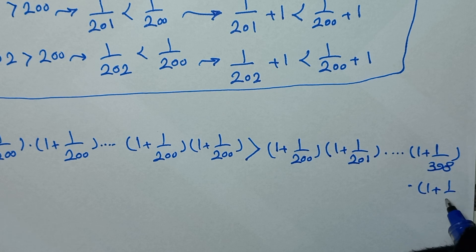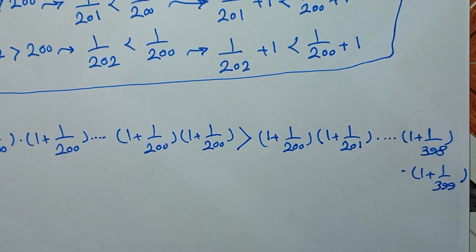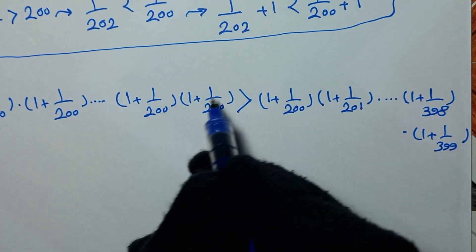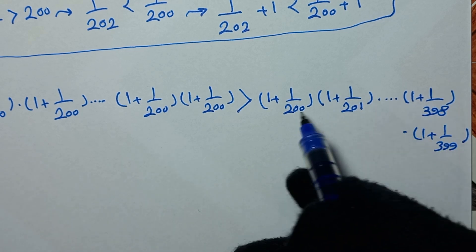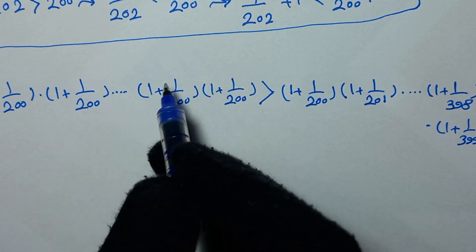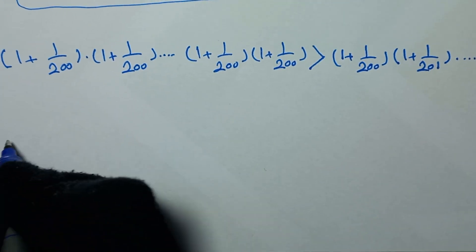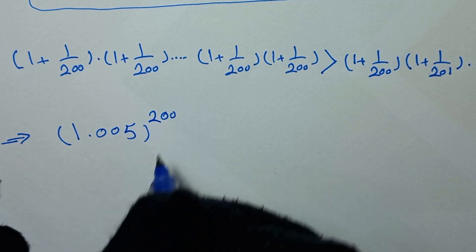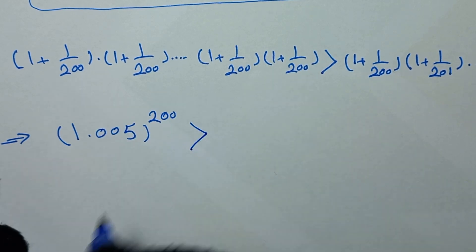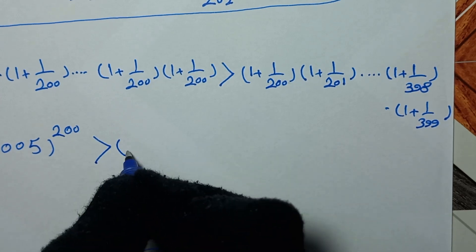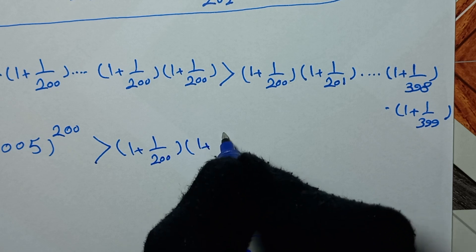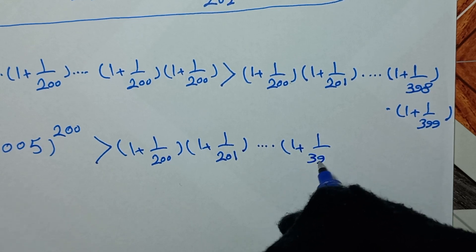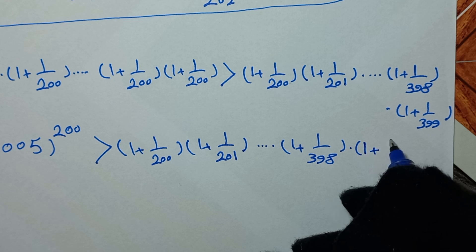So 1.005^200 is greater than the product (1 + 1/200) × (1 + 1/201) × ... × (1 + 1/398) × (1 + 1/399), where we have 200 such fractions in total.